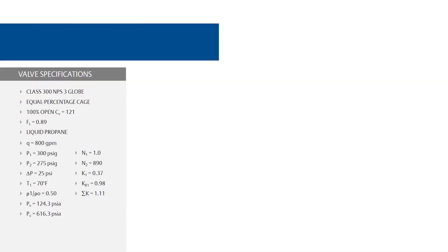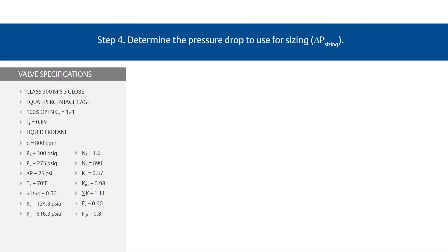Step 4: Determine the pressure drop to use for sizing, or delta P sizing. When the difference between the upstream and downstream pressure is high enough, the liquid may start to vaporize, causing choked flow. If the actual pressure drop across the valve, delta P, is higher than the pressure drop that causes choked flow — the choked flow pressure drop, delta P choked — then delta P choked must be used in place of the actual pressure drop.